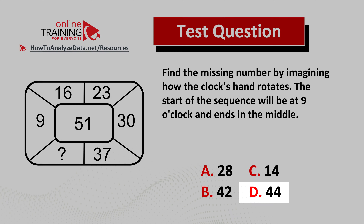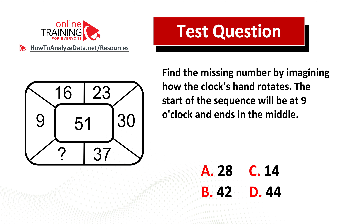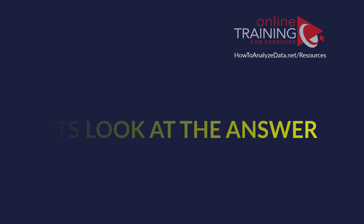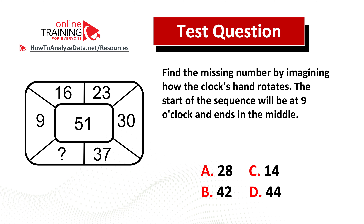Do you think you know the answer? Now might be a good time to pause this video to see if you can come up with the answer on your own. Did you come up with the answer? Before we jump to the solution, I want to pinpoint the sequence. The start of the sequence is at nine o'clock with the number 9. The next numbers are 16, 23, 30, 37, then the missing number, and then 51.